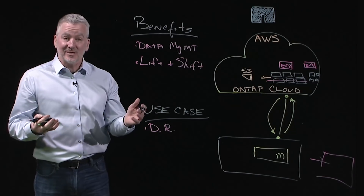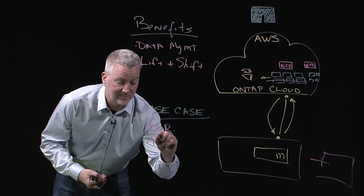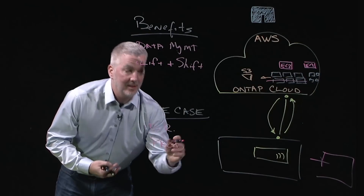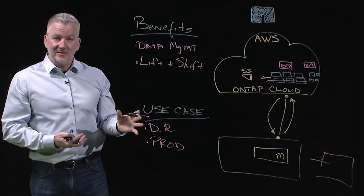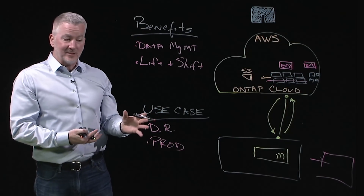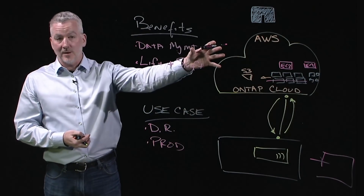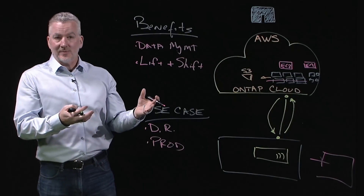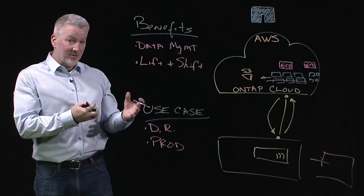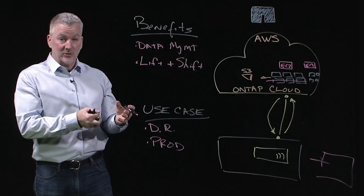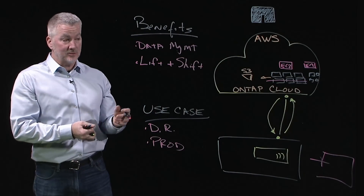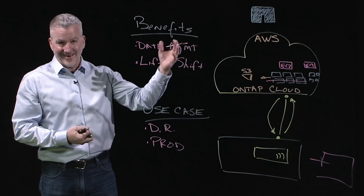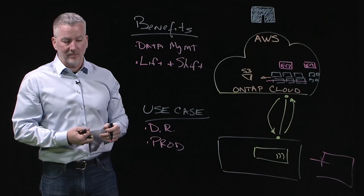Another use case is production workloads. You can easily use the same process to lift and shift your data up to the public cloud, and leverage ONTAP Cloud's high availability and non-disruptive operations, which ensures you can run your mission-critical applications now in the public cloud.